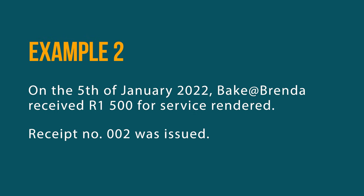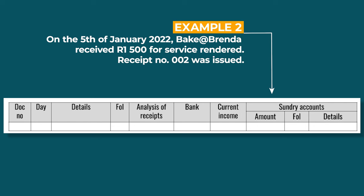On the 5th of January 2022, Bake at Brenda received 1,500 rand for services rendered. Receipt number 002 was issued. We record receipt number 002, the day as the 5th, and details as cash or services rendered. The 1,500 rand should also be recorded in the analysis of receipt column, the bank column, and also the current income column.